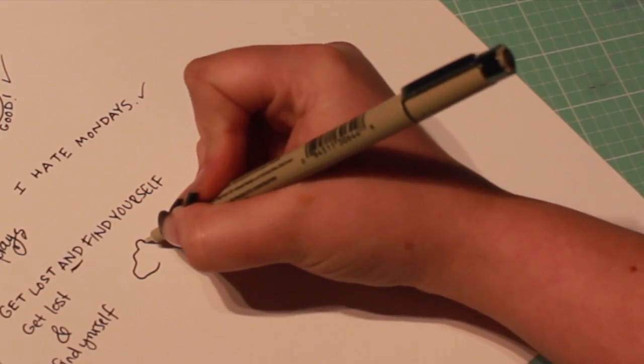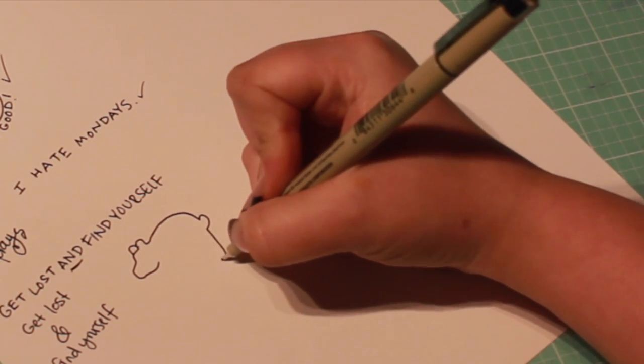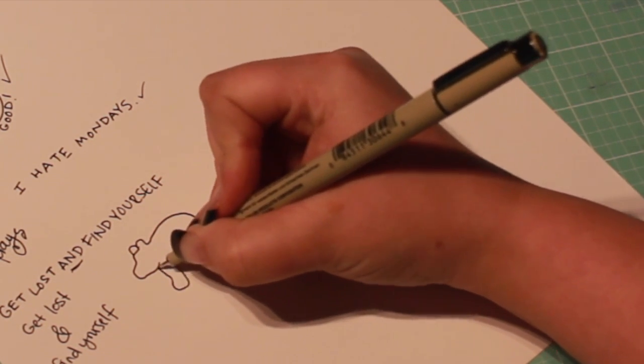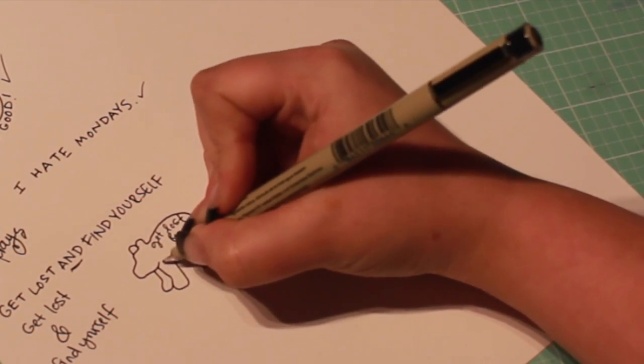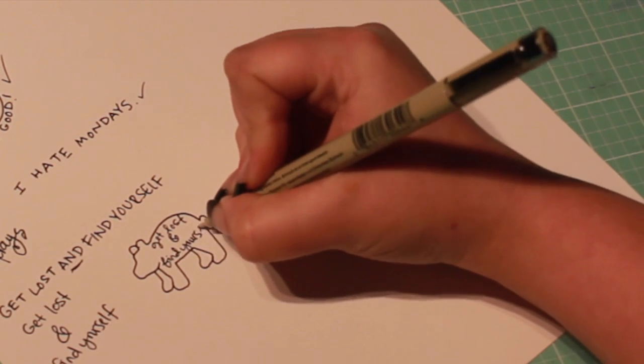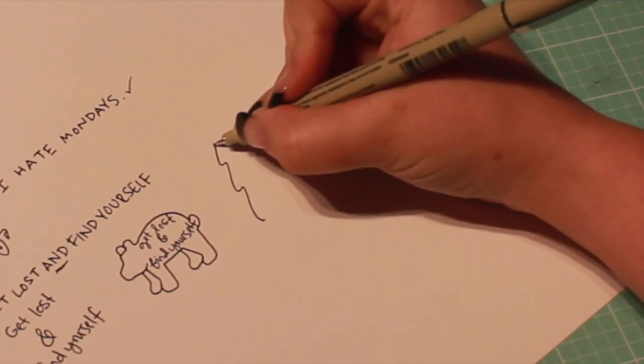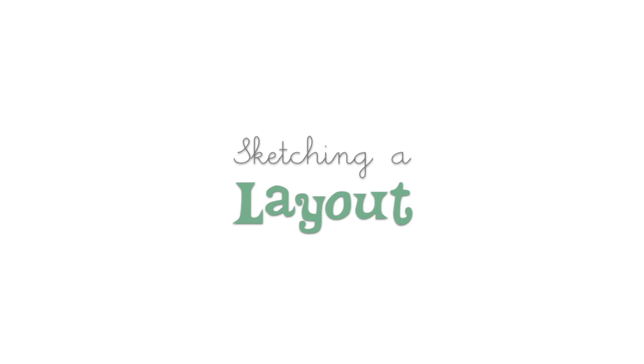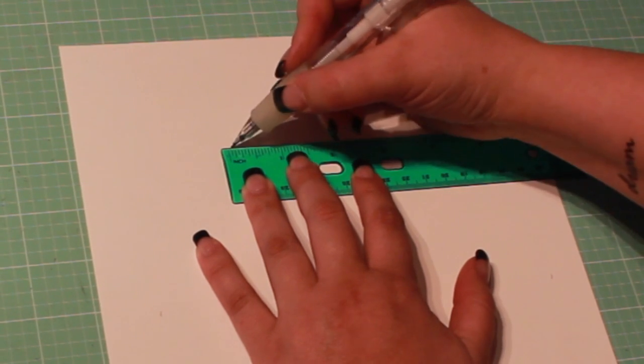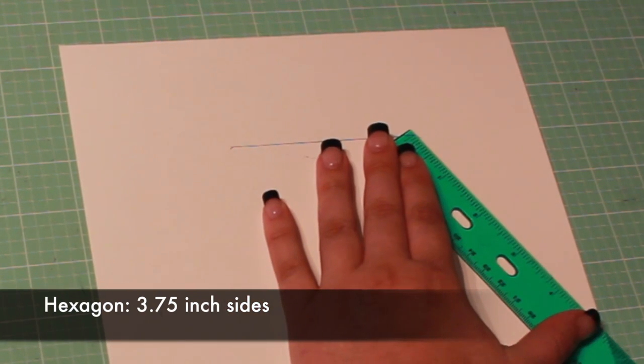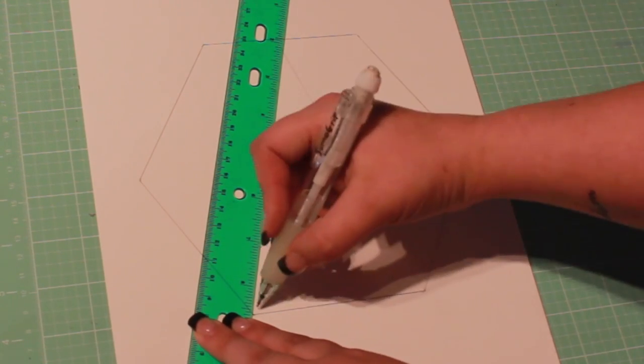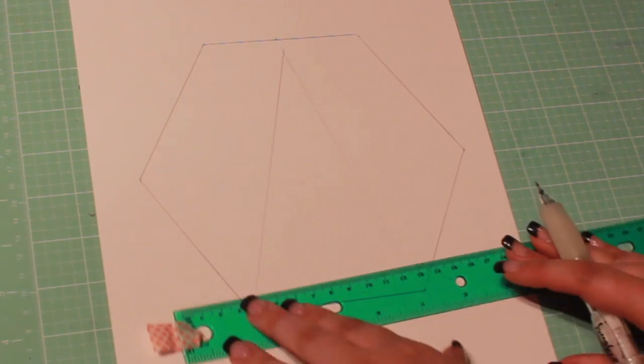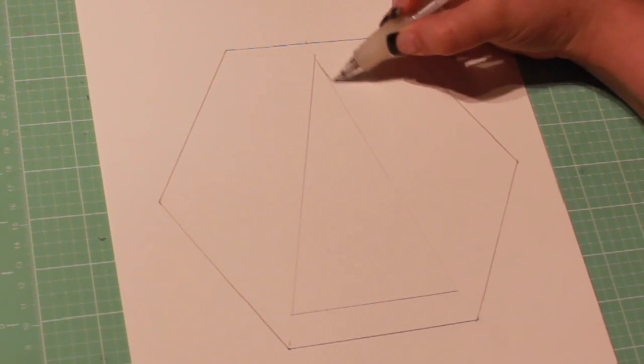Make a few thumbnail sketches to give yourself a starting point. I'm going to letter the words, get lost and find yourself. At first I thought a bear might be cool, but then I realized I wouldn't want to run into a bear while lost. So instead I'm opting for a tree design. Now we can start sketching our design. I think a hexagon would make a cool frame. I'm making each side three and three-quarter inches long.